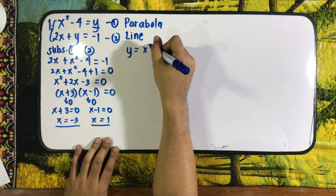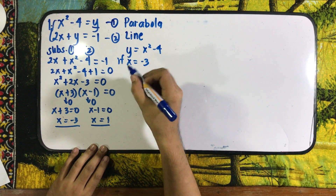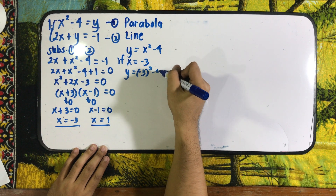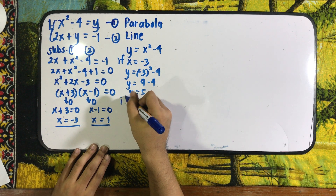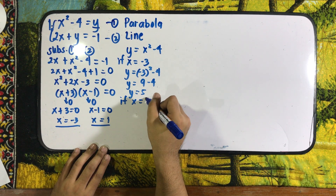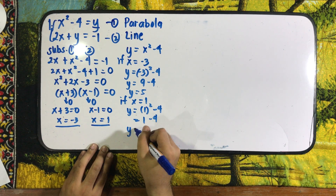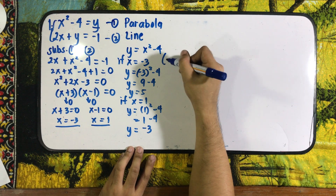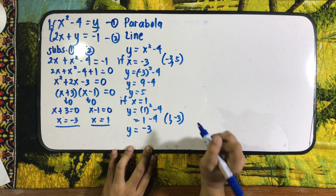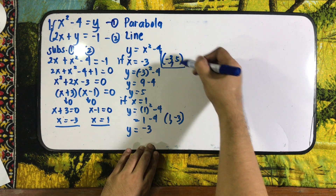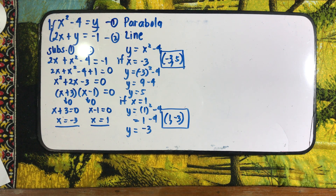Using y equals x squared minus 4: if x equals negative 3, then y equals negative 3 squared minus 4, which is 9 minus 4, so y equals 5. If x equals positive 1, then y equals 1 squared minus 4, which is 1 minus 4, so y equals negative 3. Our first solution is (negative 3, 5) and the second solution is (1, negative 3). These are the two intersections.